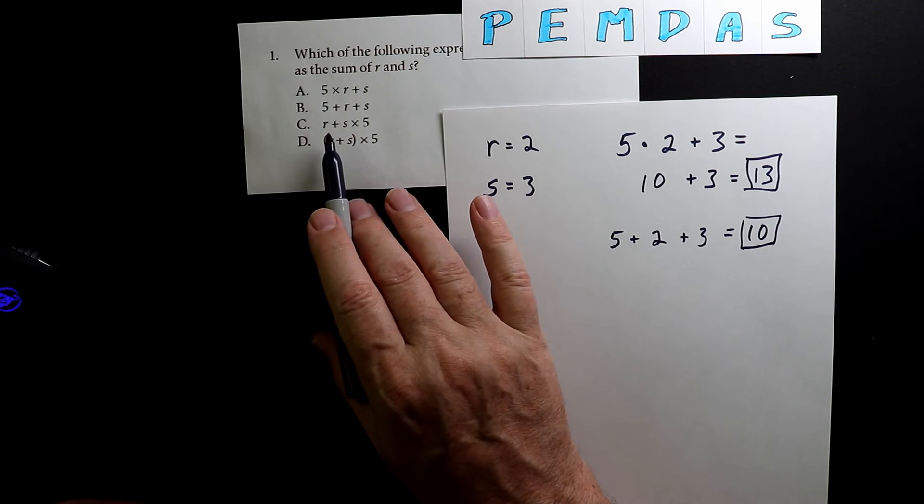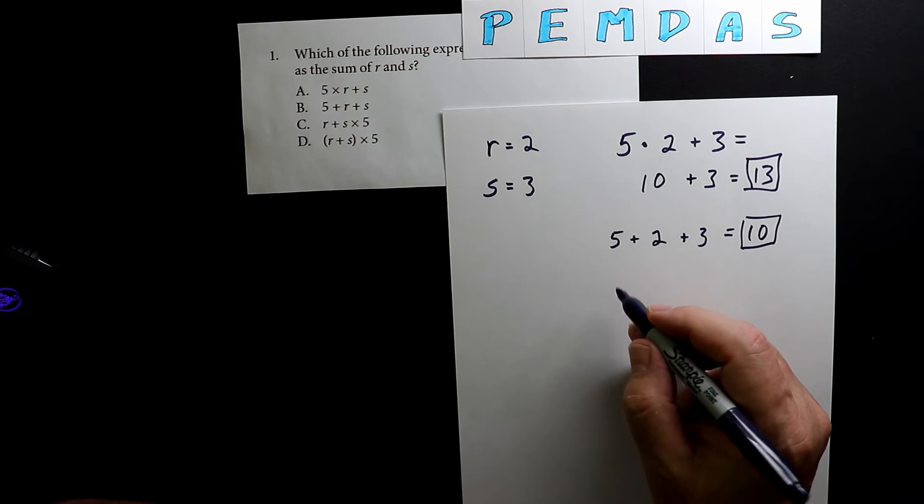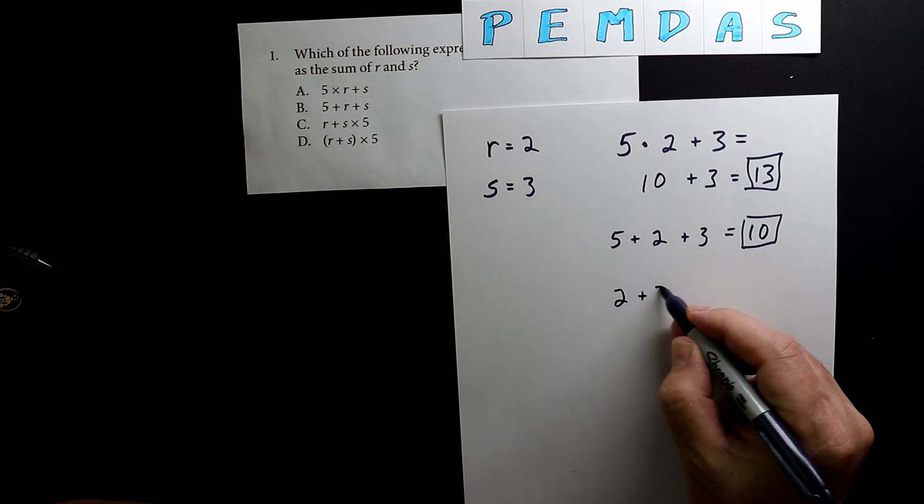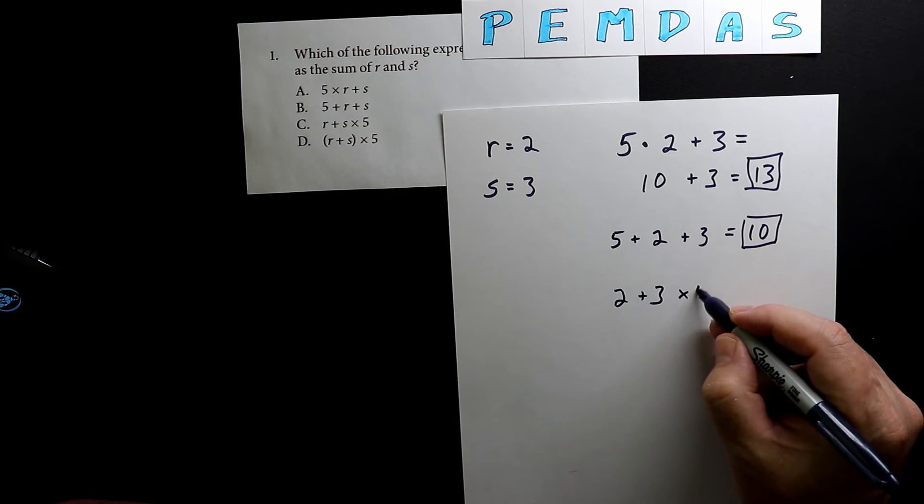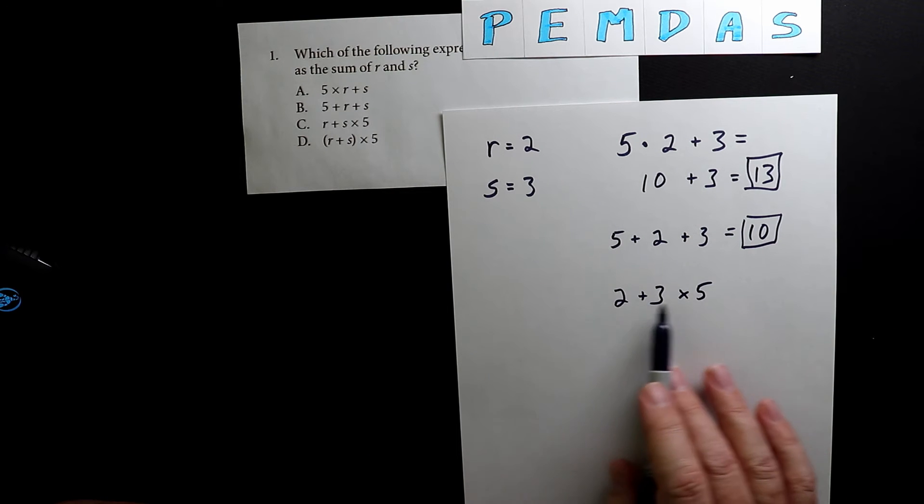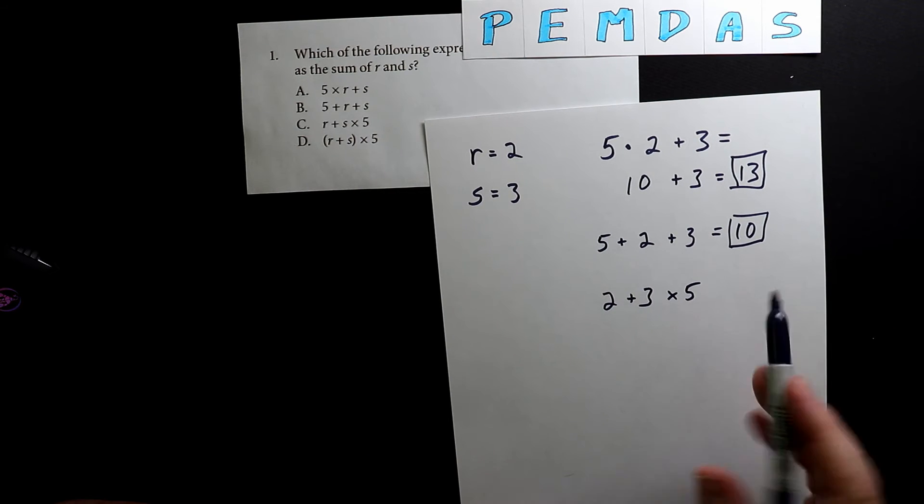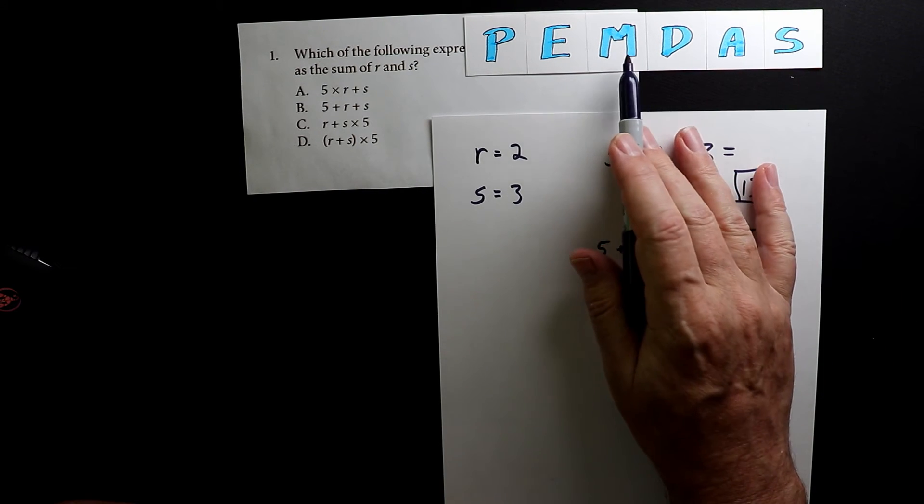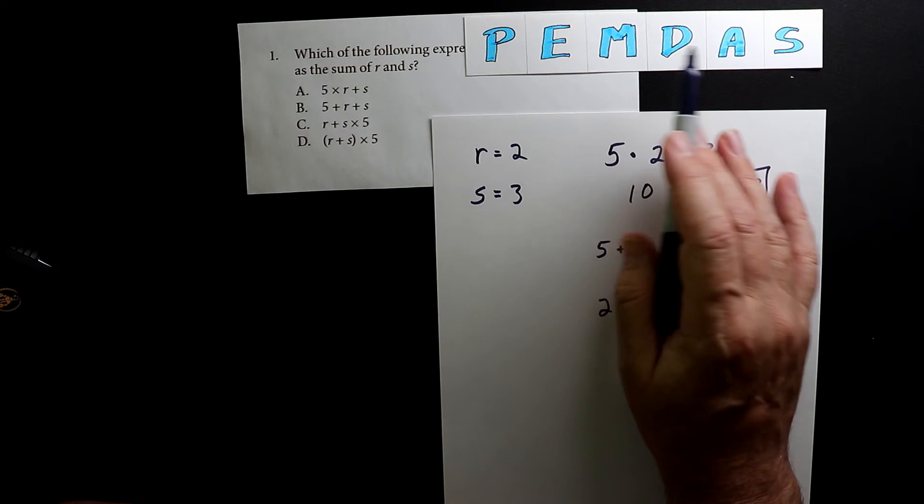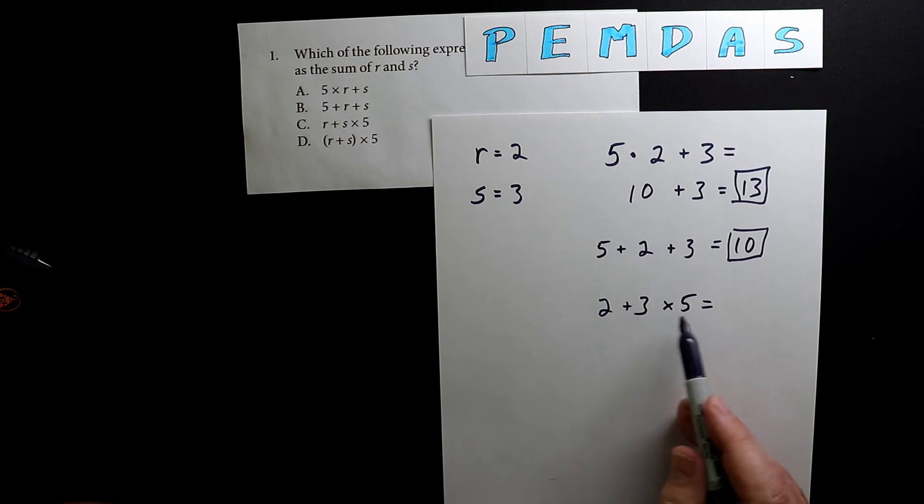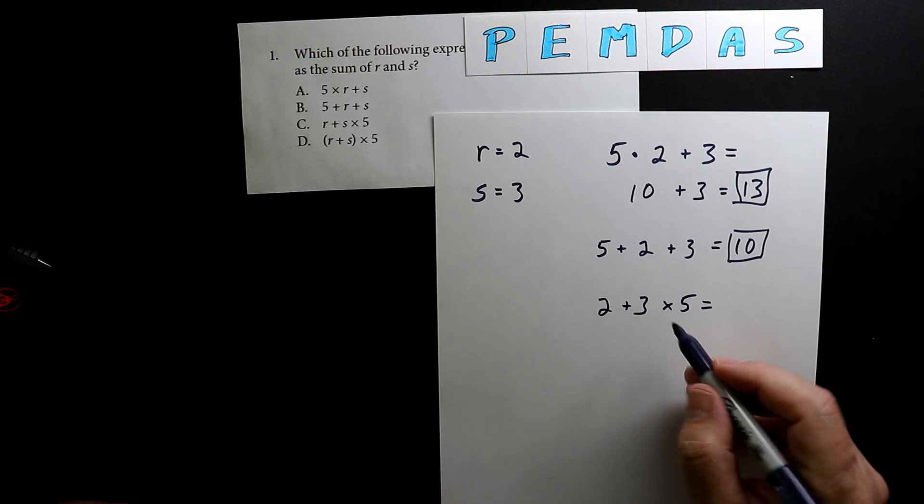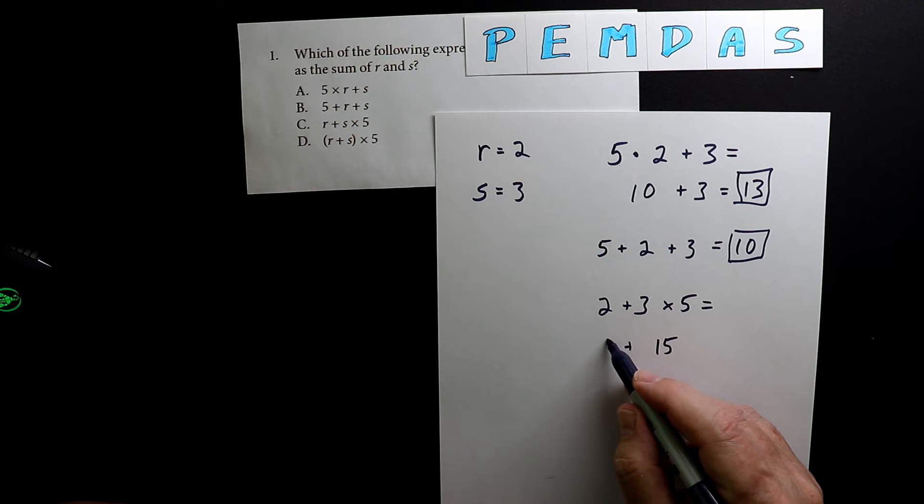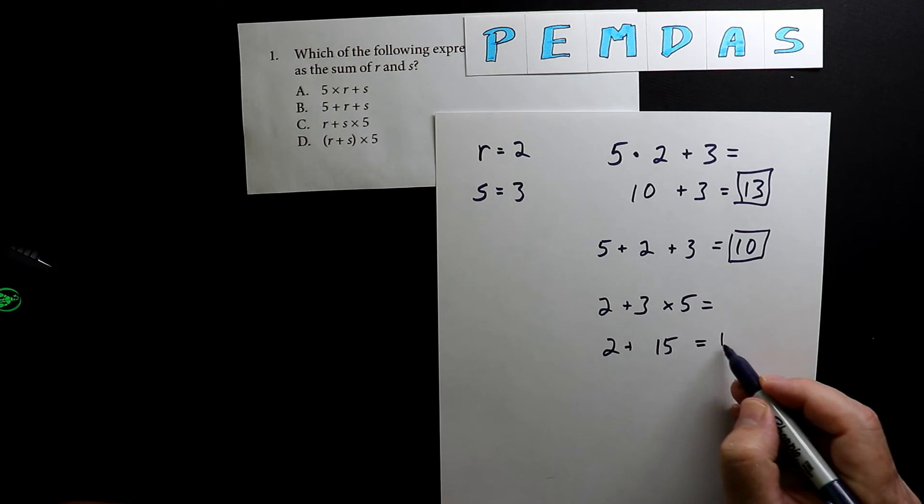Now let's do this one next. We have r, which is 2, plus 3 times 5. This is where some people would just go straight across, but if we're using the order of operations, you can't do that. You have to do the multiplication before the addition. Three times 5 is 15, and then we add 2 to that, which equals 17.